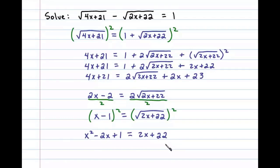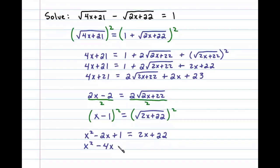At this point we're left with a quadratic, which can be solved if we obtain standard form equal to 0. So we'll subtract 2x on both sides and subtract 22, leaving us with x squared minus 4x minus 21 equals 0.